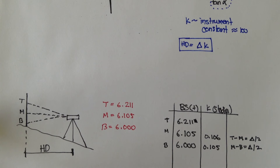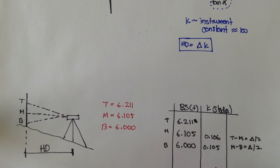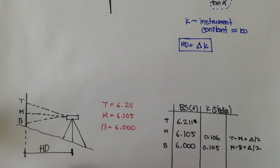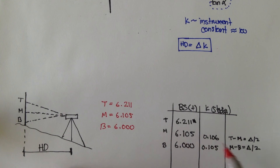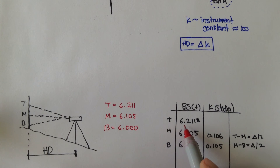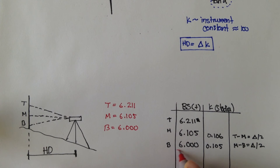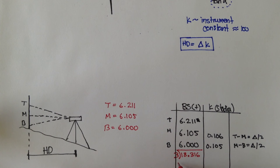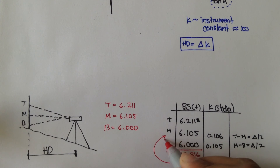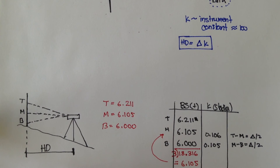Now we also want to do a quick check on our three readings. We take the average of these values, and if our result is close to the middle, that means our result is pretty good. So 6.211 plus 6.105 plus 6.000 equals 18.316. Dividing by three, we get approximately 6.105 — exactly the middle — so our readings were pretty accurate.